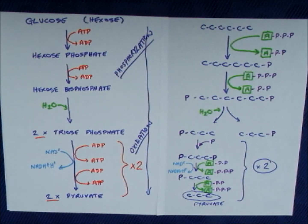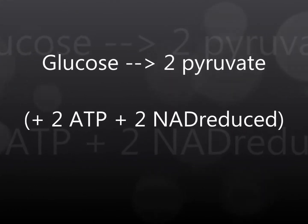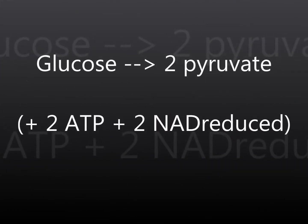From glucose, we produce two pyruvate molecules. We also have a net production of two ATP and a net production of two NADH plus H+ from NAD.